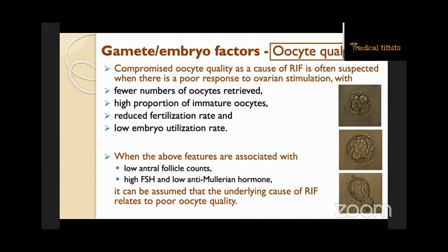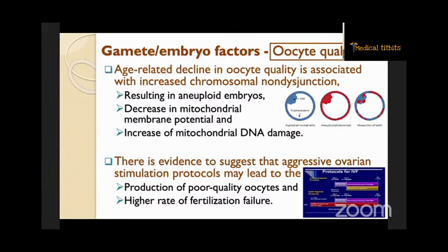Regarding oocyte quality, compromised oocyte quality as a cause of RIF is often suspected when there is a poor response to ovarian stimulation, with fewer oocytes retrieved, high proportion of immature oocytes, reduced fertilization rate, and low embryo utilization rate. When these features are associated with low antral follicle counts, high FSH, and low anti-Müllerian hormone, it can be assumed the underlying cause relates to poor oocyte quality. Age-related decline is associated with increased chromosomal non-disjunction, resulting in aneuploid embryos, decreased mitochondrial membrane potential, and increased mitochondrial DNA damage. Aggressive ovarian stimulation protocols may also lead to poor quality oocytes and higher rates of fertilization failure.